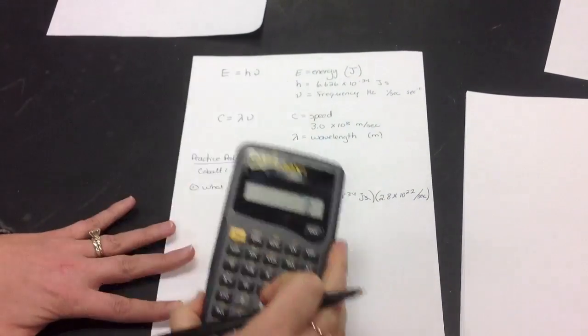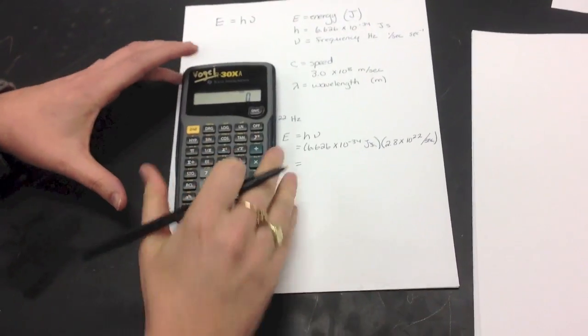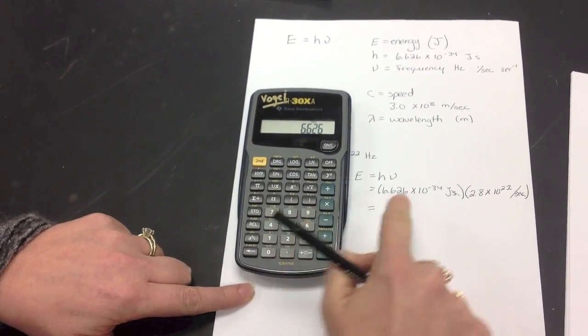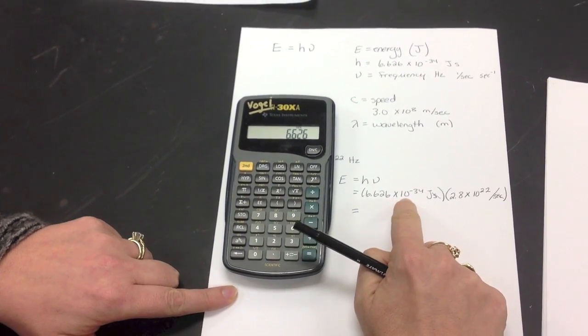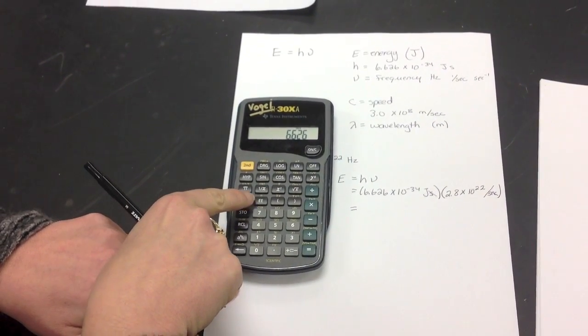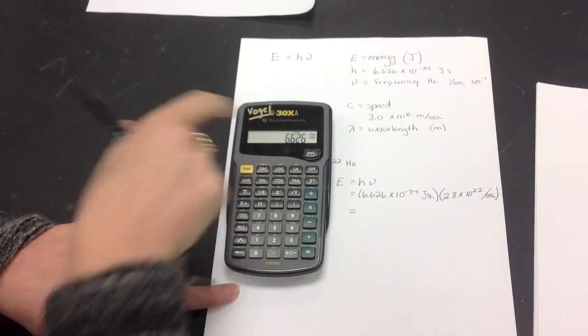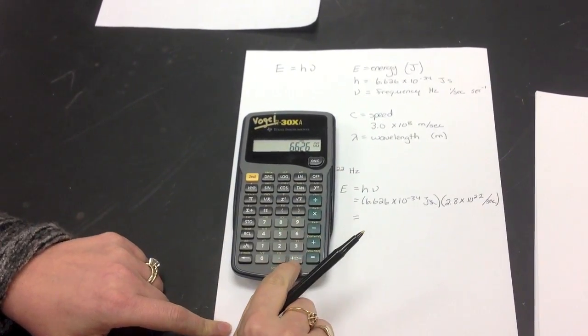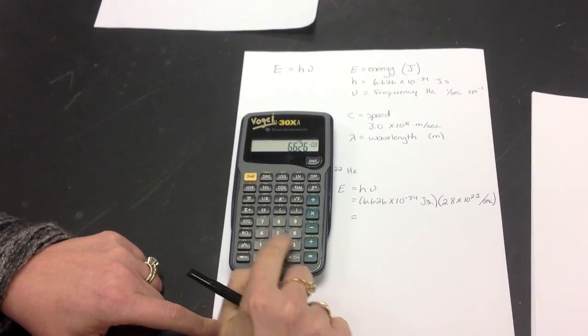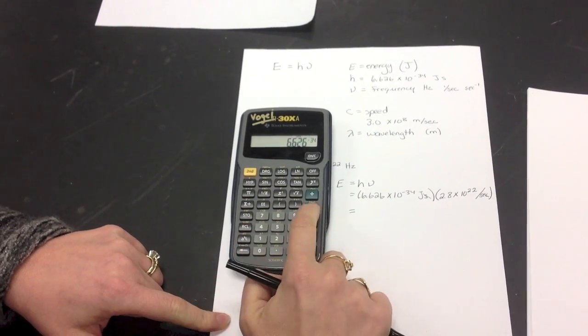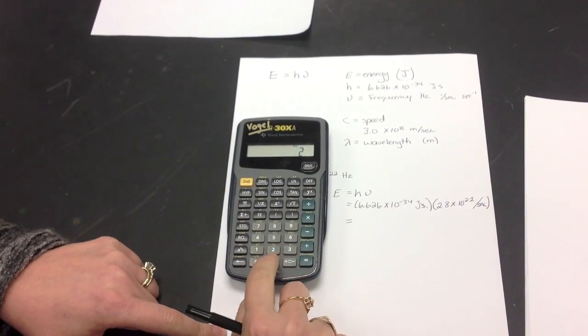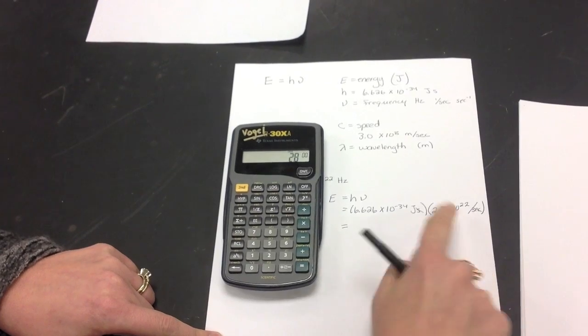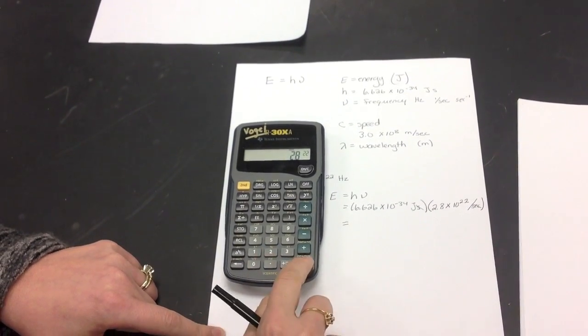Now, it's kind of tricky doing this on the calculator, so I'm going to show you how to do it. So, we're going to plug in this first, 6.626. Now, the way you write times 10 is you push the EE button. So I'm going to push EE, and it comes up like that. Sometimes on your calculator it might actually say an E instead of that. Now I'm going to push the plus minus sign to get the negative, and then 34. 24 times, now this number, 2.8. Again, I have to do EE. That means times 10, and I put 22 in, equals.